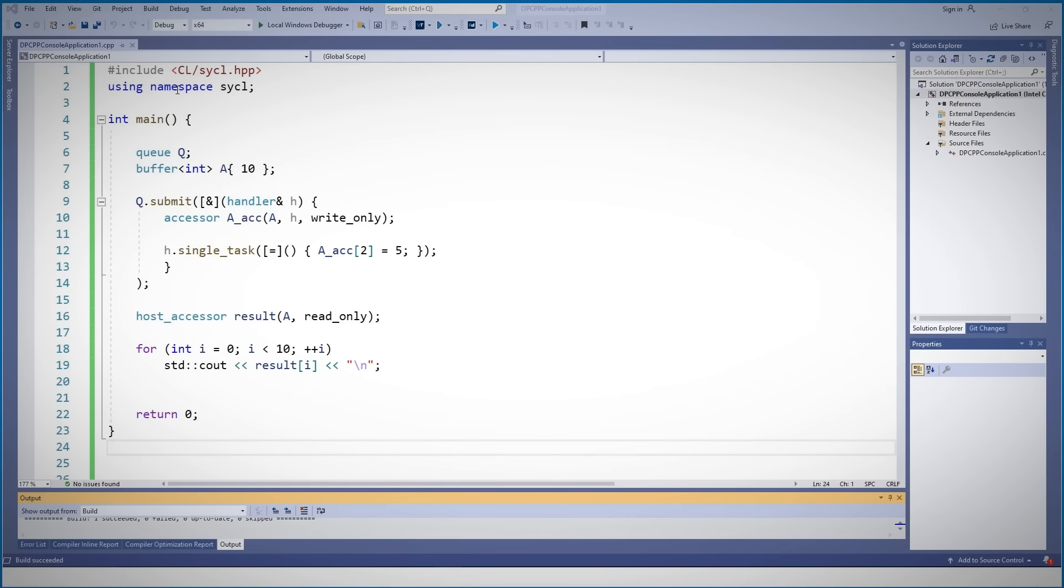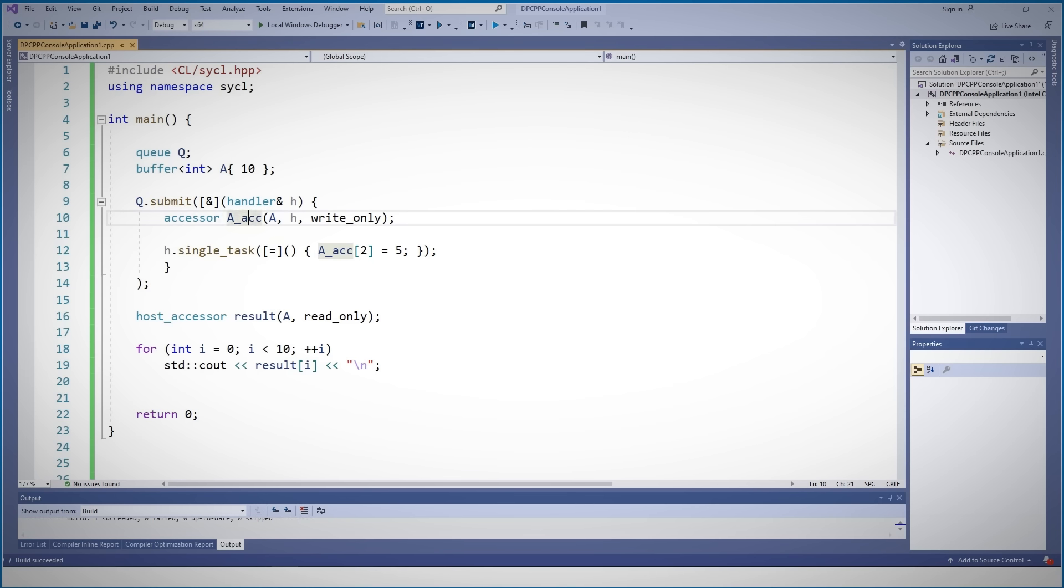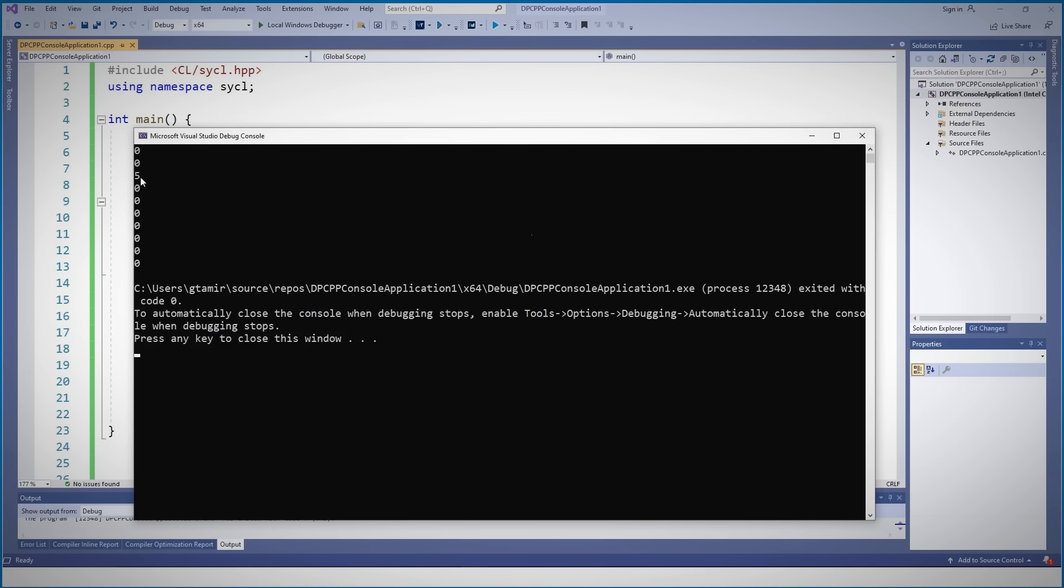So I'm using SYCL, I have a queue, A is a buffer of 10 integers, and I submit this to the queue. An accessor will access buffer A on H handler for write-only, and I'm submitting a single task that will assign 5 to the 3rd entry of A. And here I copy the A buffer back to the host into result. And I just print the results, and I'm getting the results, only the 3rd entry is 5.